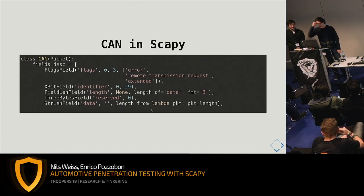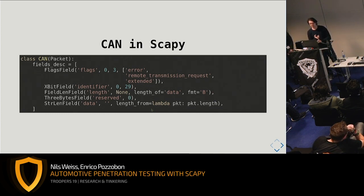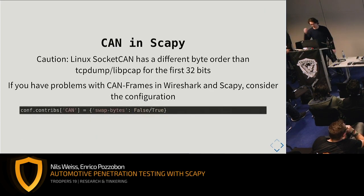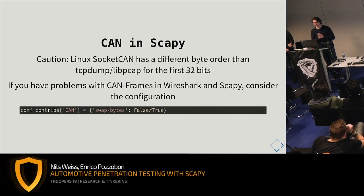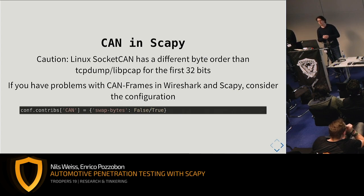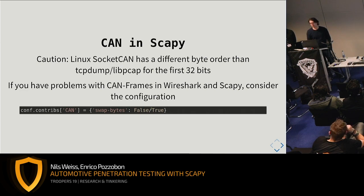In Scapy, we have a CAN object with a couple of parameters: flags, the identifier (which is the most important one), and the data field, which can have arbitrary data up to 8 bytes. There's one special thing to be aware of — a different byte order between tcpdump/PCAP and Linux socket CAN. So if you want to import a PCAP file from Wireshark, the byte order of the first 32 bits is different. There's a configuration to swap that if you run into problems.